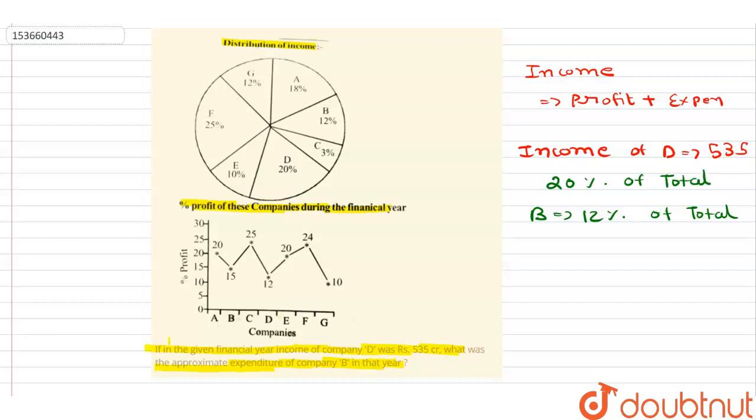So if I want to find B's income, that can be written as 12 upon 20 into 535. This would be the income of B.